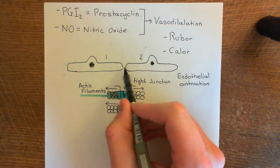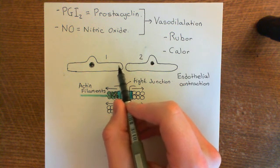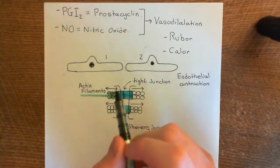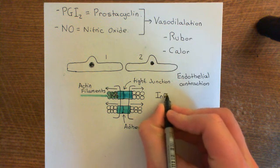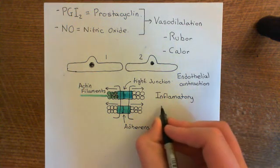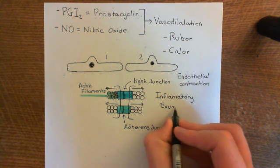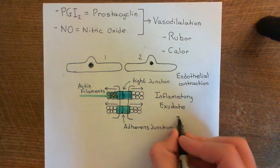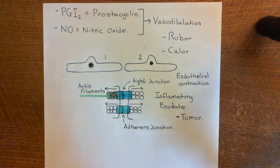This gap is big enough for proteins to move through but not big enough for cells to move through. So cells aren't going to start moving through here, but you are going to get fluid and proteins coming in — this mixture of fluid and proteins is known as an inflammatory exudate. It's going to cause swelling at the area of inflammation, and the old Latin name for swelling is tumor.